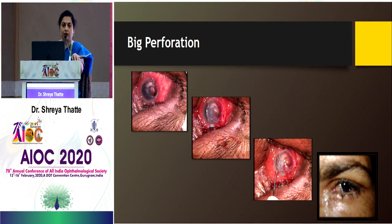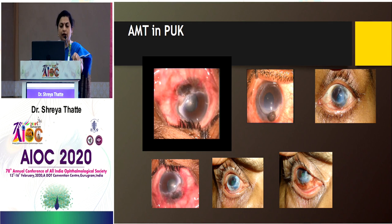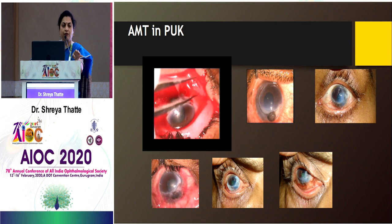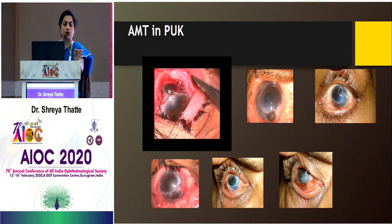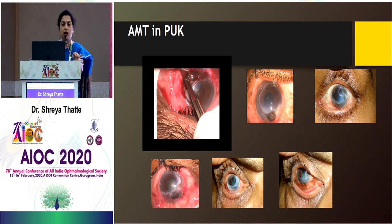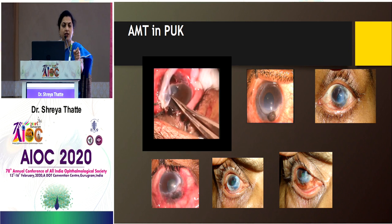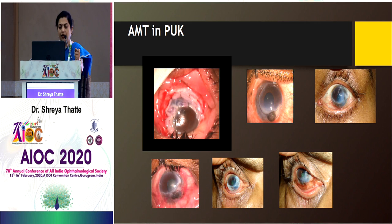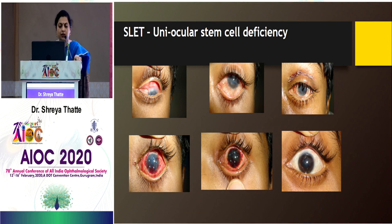If scar tissue from the perforated area is removed last, the AC leaks and dissection becomes difficult. In such cases, multi-layer amniotic membrane achieves very effective healing. In stem cell deficiency, amniotic membrane can be used for fornix reconstruction, followed by SLET — which Dr. Tuhin will cover. For ocular surface reconstruction in recurrent pterygium, amniotic membrane can be combined with conjunctival autograft. For large cases, pterygium excision with amniotic membrane plus stem cells placed over the limbus gives good results.